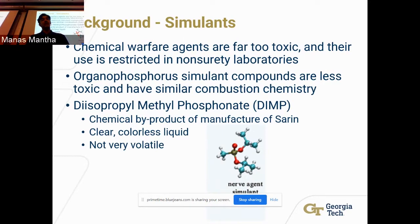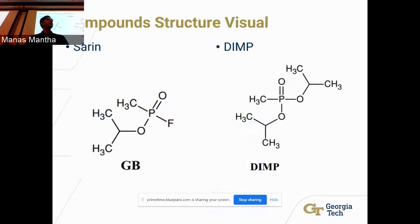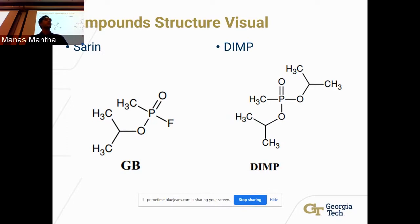DIMP is a clear, colorless liquid; it's not very volatile or reactive, so it's much safer. If DIMP ever gets on human skin, the most it can do is cause a rash — it's not lethal. Looking at the chemical structures, both sarin and DIMP share an isopropyl methyl group and a phosphorus double-bonded to oxygen. The central atom is bonded to electronegative atoms, making it reactive, and the structural similarity confirms DIMP can be used as a viable simulant for sarin gas.